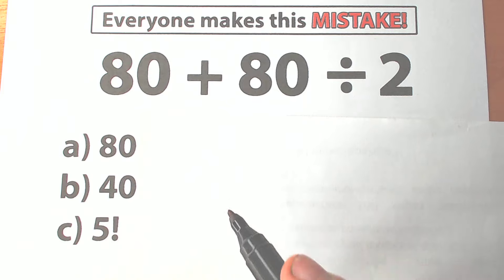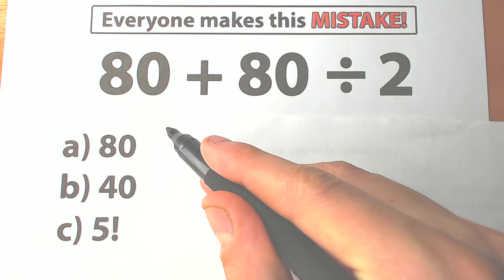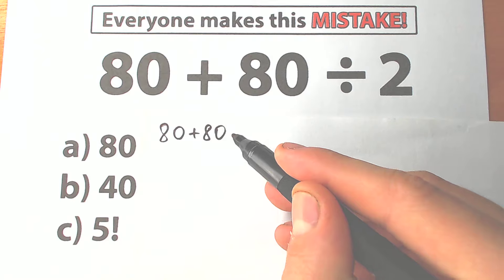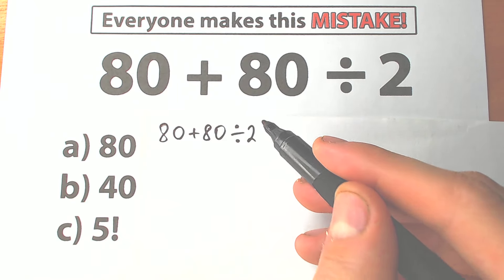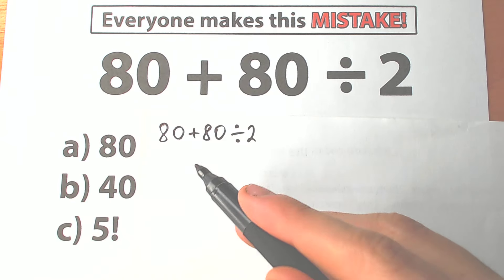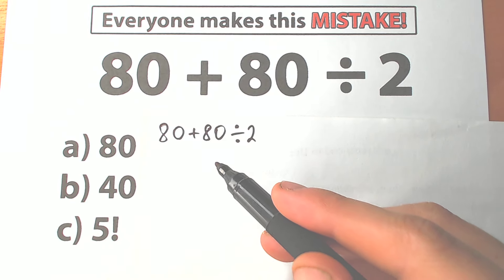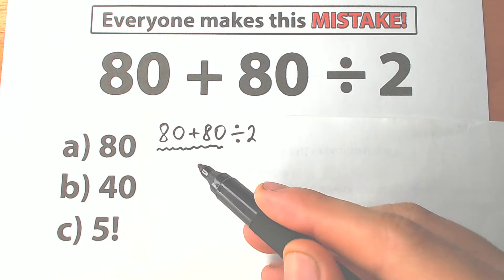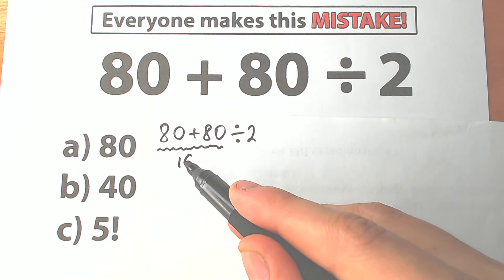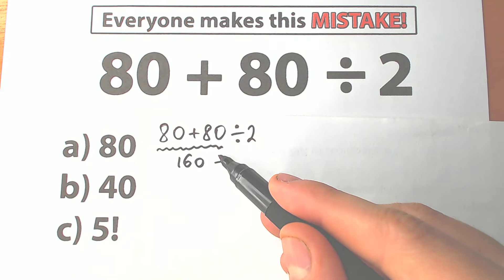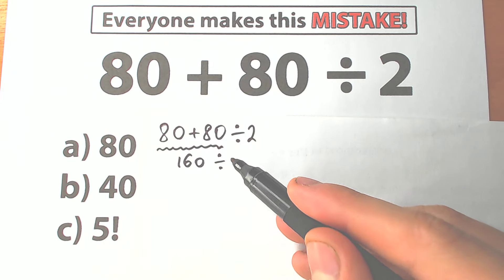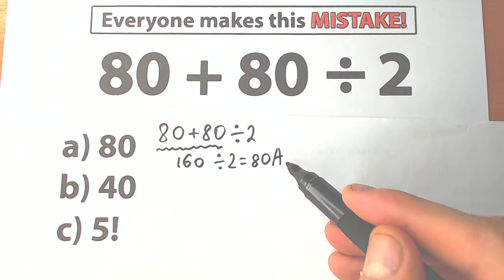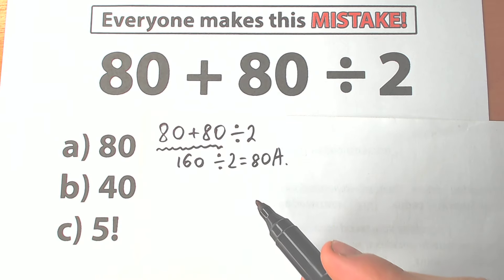One part of students solve this question like that — and I feel like a lot of students do this. They say, okay, let's go from left to right. So on the left-hand side we have 80 plus 80, which equals 160, and then we divide by 2 and get 80. So a lot of students say the correct answer is option A.